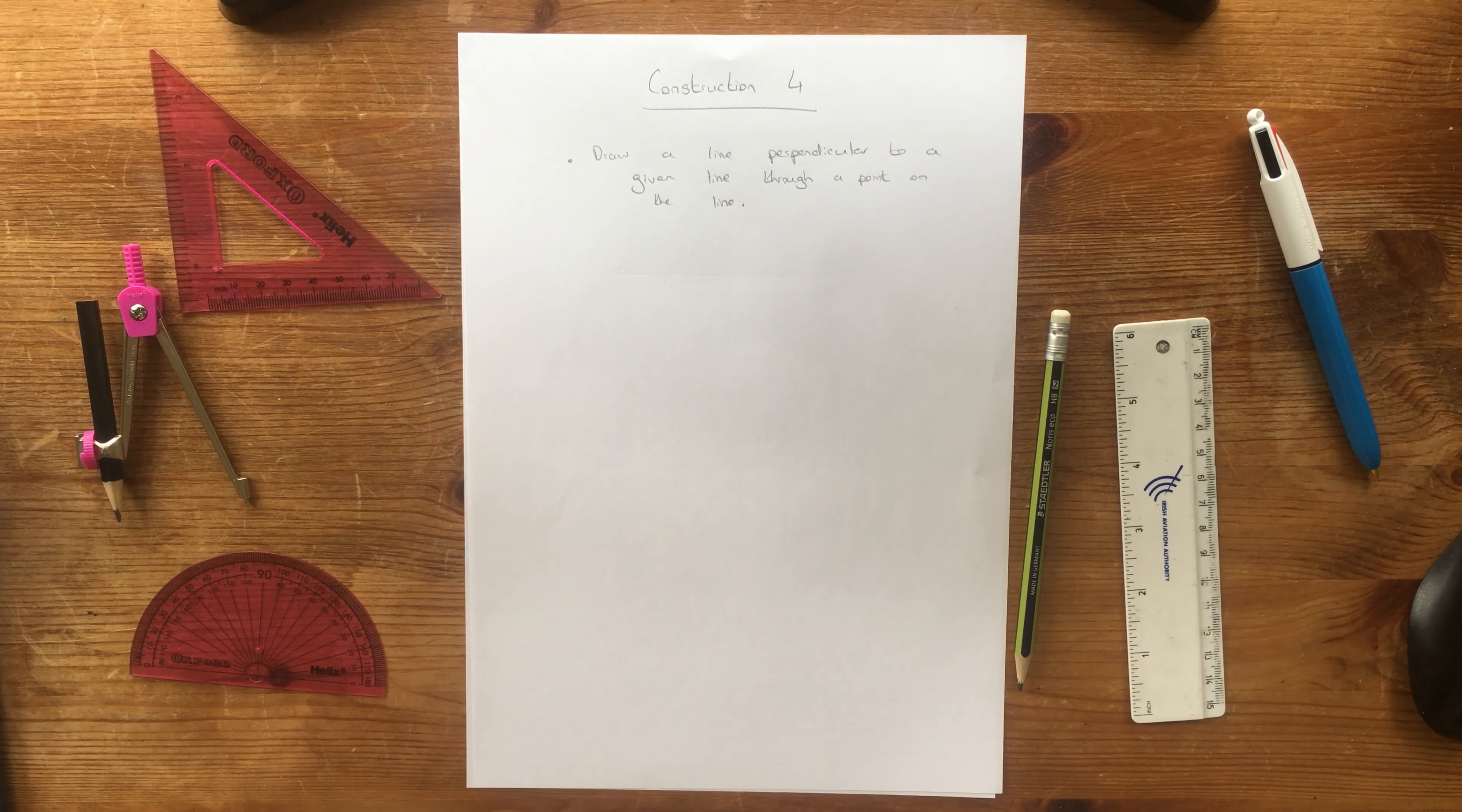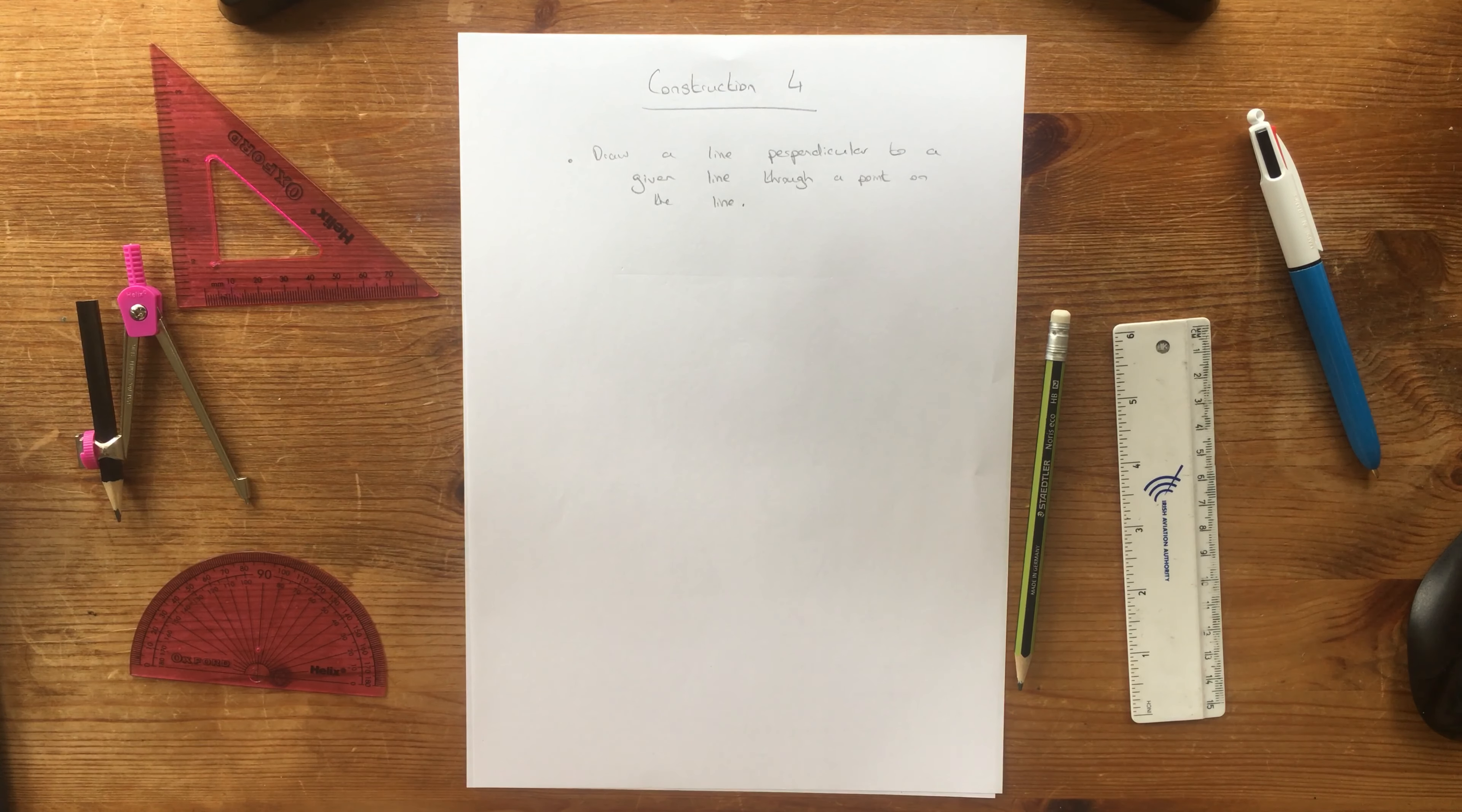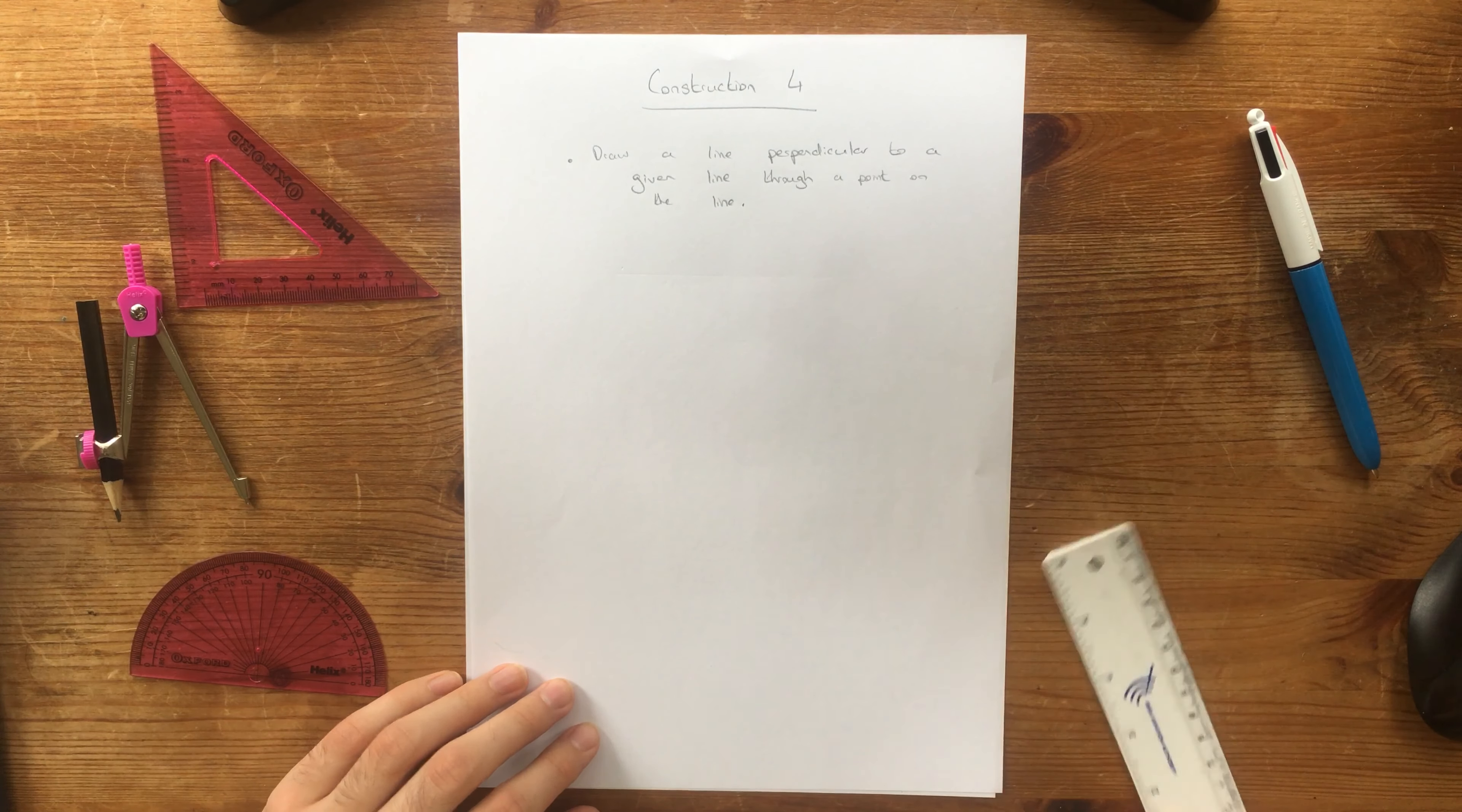We're going to use, first of all, a ruler and a compass, and then we're going to use the set square and a ruler for the second one. So first of all, what is construction four? It is to draw a line perpendicular to a given line through a point on that line.